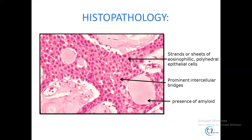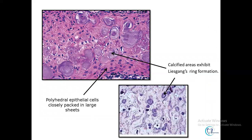Regarding histopathology, the characteristic feature of CEOT is the presence of strands or sheets of polyhedral cells with eosinophilic cytoplasm, and between these sheets of cells there are prominent intercellular bridges. Another characteristic finding is the presence of amyloid-like material. Some areas in CEOT cases may exhibit calcification giving rise to Liesegang ring formation, which is another diagnostic feature.